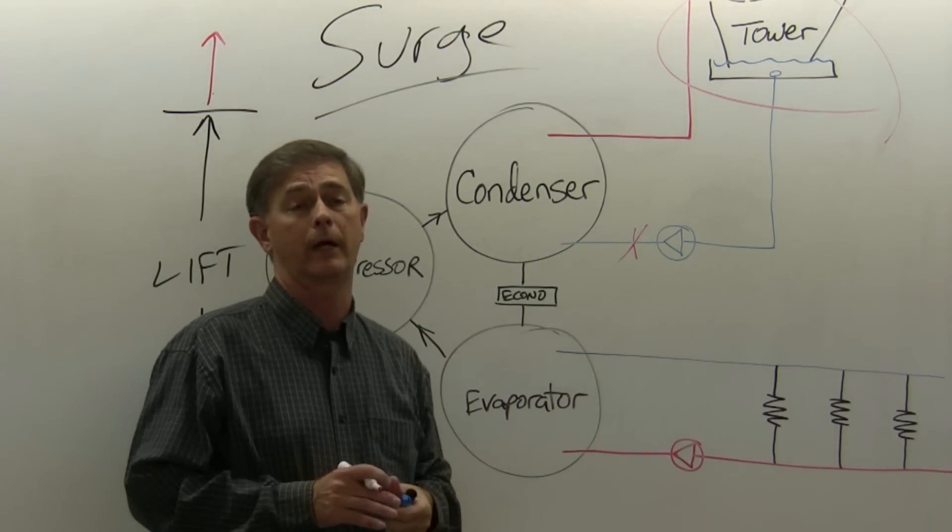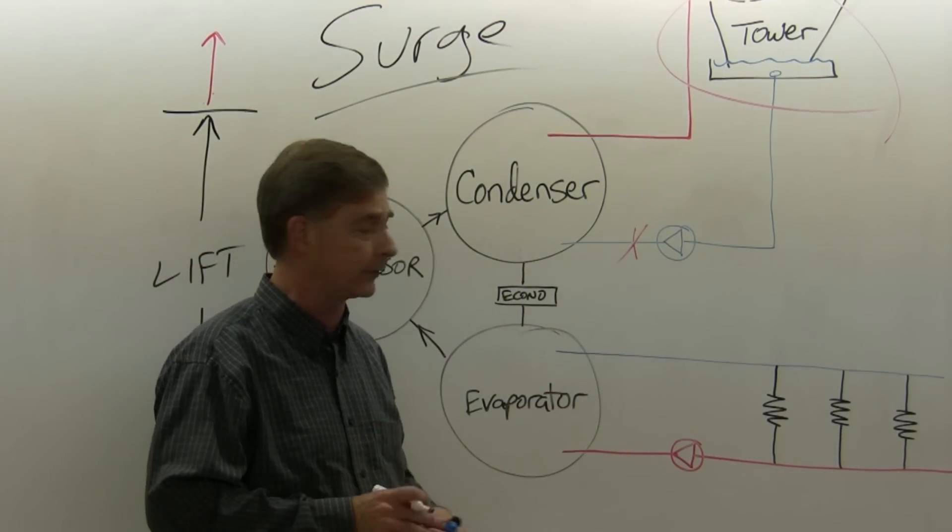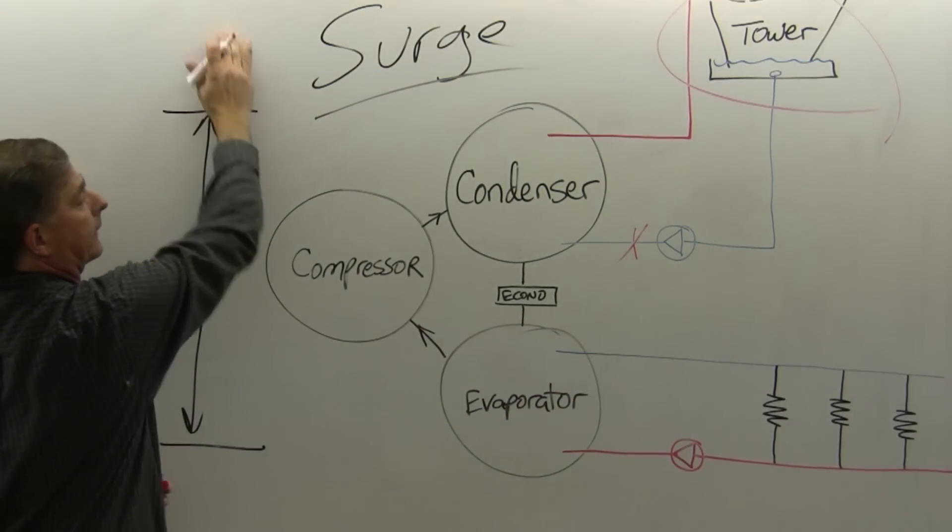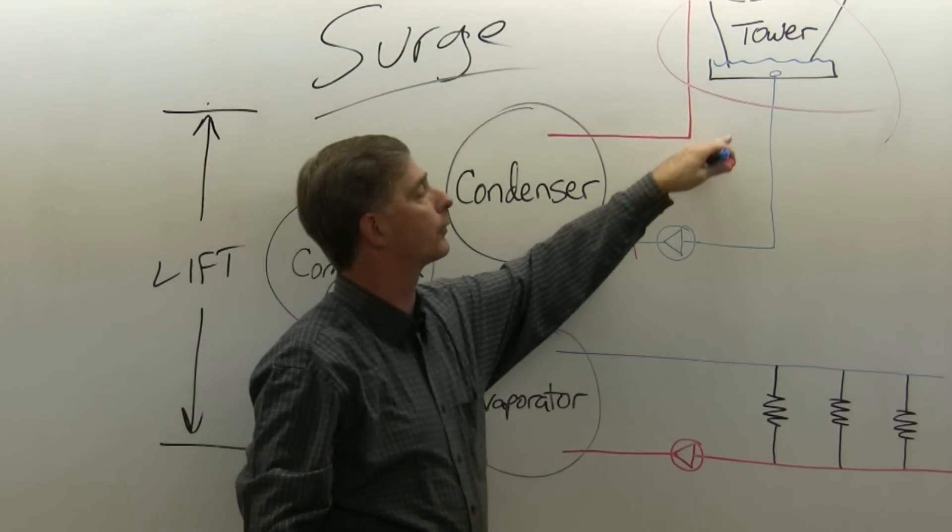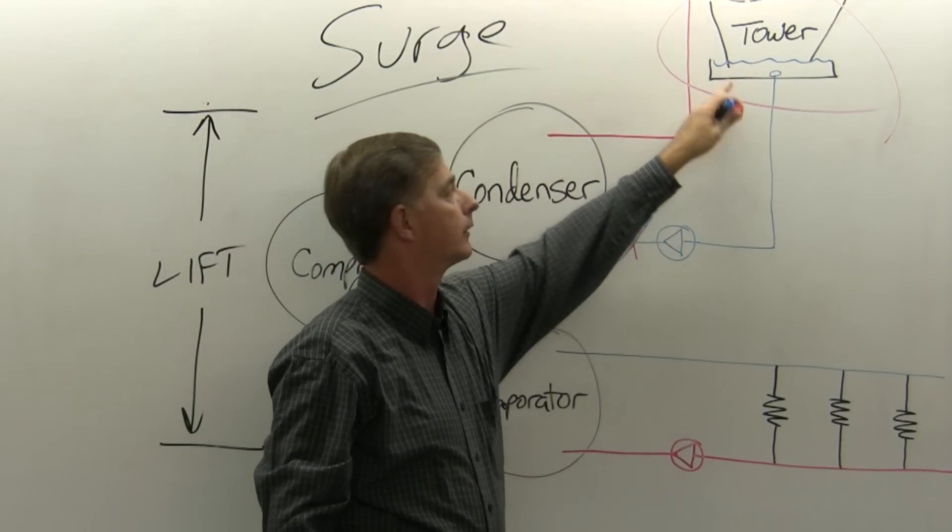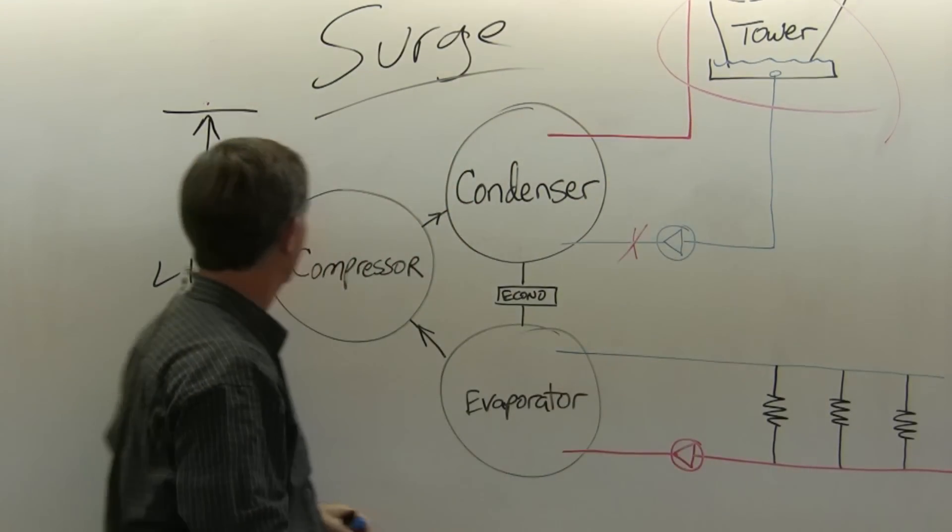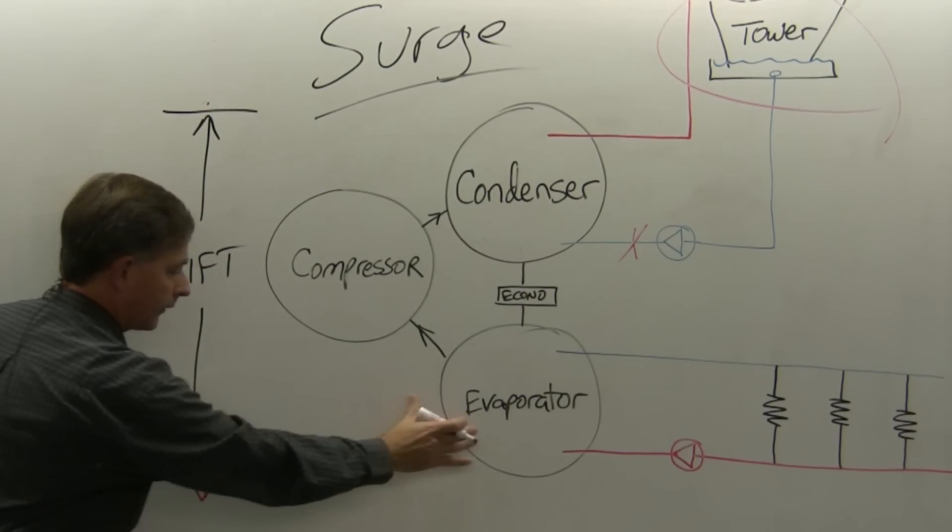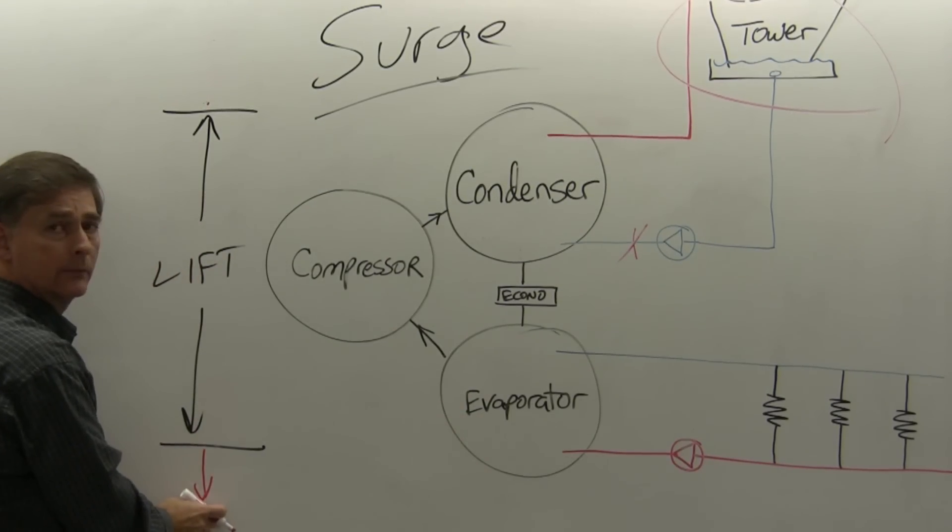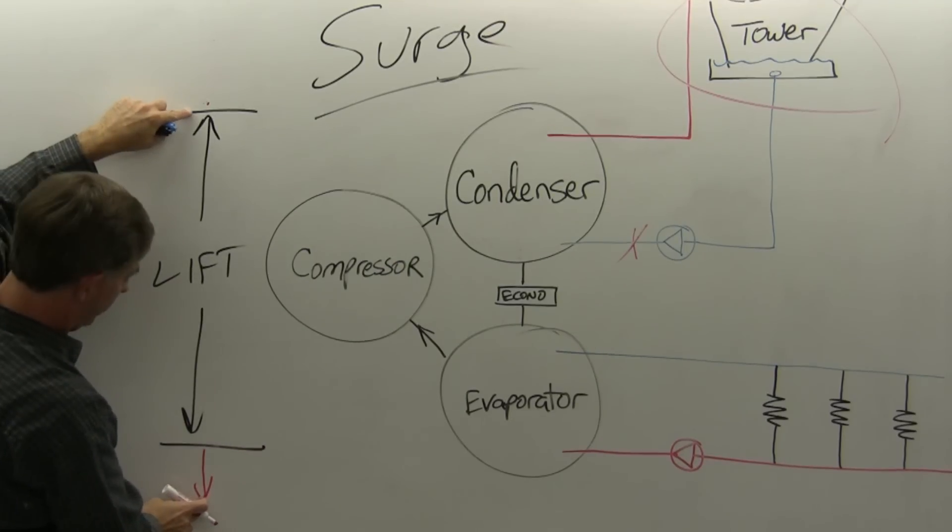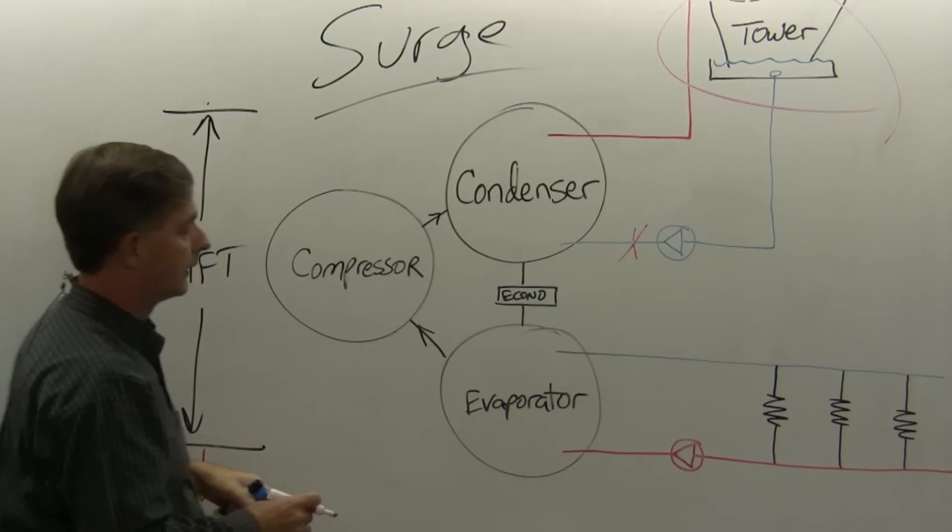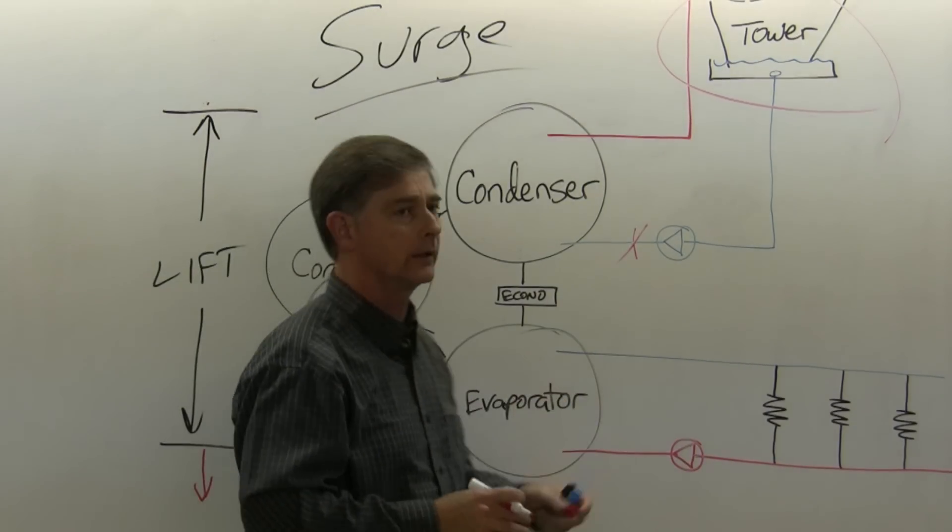You can also have surge on the low side of the machine. If we look down here, just like this line can go up for a number of different reasons related to this part of the system, we can also have our pressure in the evaporator drop, and that will also increase your lift and lead to surge. It's a little less common, but it does happen.